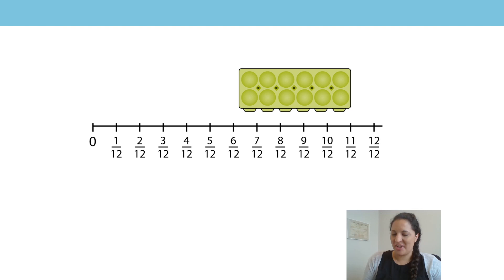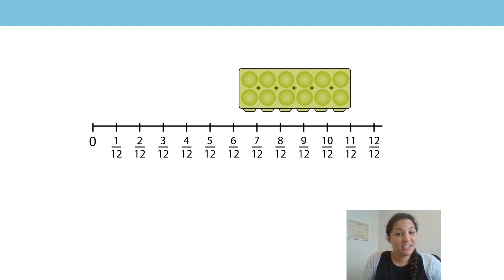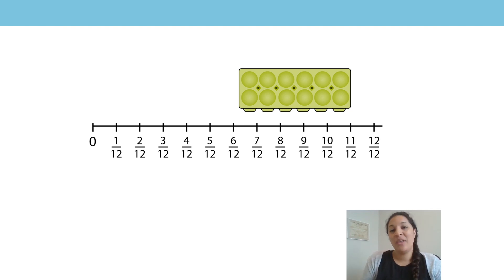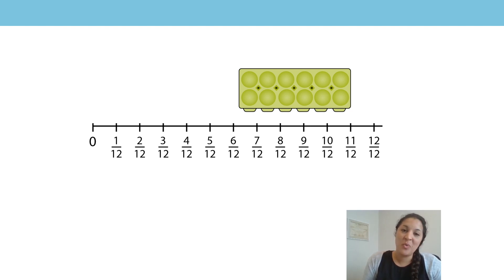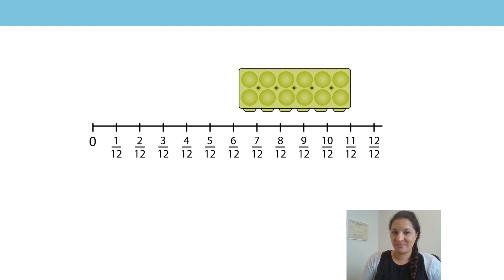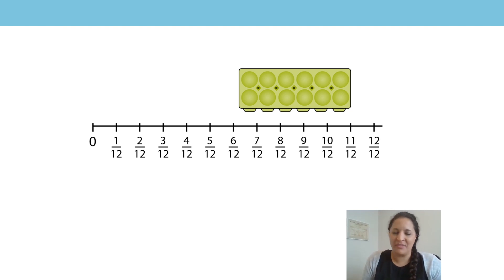Let's have a go using our eggs and our egg boxes. First of all, what's the unit fraction? Well, the egg box and the number line have been divided into twelve equal parts, so our unit fraction is one twelfth. Let's count up in twelfths.